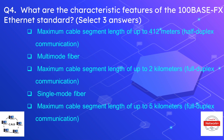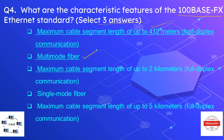Question number four: what are the characteristic features of the 100BaseFX Ethernet standard? Select three answers. The correct options are: a maximum cable segment length of up to 412 meters for half-duplex communication, multi-mode fiber optic cabling, and a maximum cable length of up to 2 km when full-duplex communication is used.